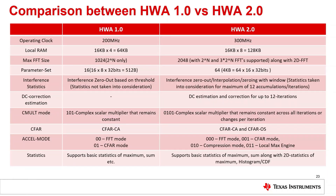This slide shows the improvements of Hardware Accelerator 2.0 over Hardware Accelerator 1.0. Improvements include larger clock speed, larger local RAM size, larger FFTs with various types, more parameter sets, more sophisticated interference and DC correction algorithms, multiple complex multiplication modes, more types of CFAR, and a larger number of accelerator modes including compression and local maxima engine. Additionally, advanced 2D statistics are now possible with Hardware Accelerator 2.0.